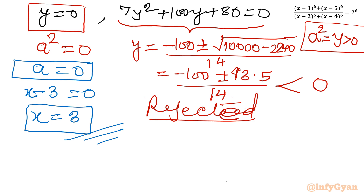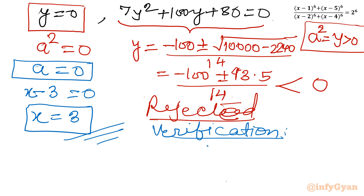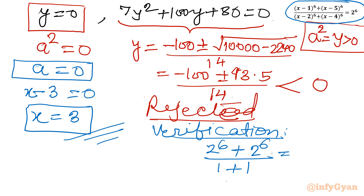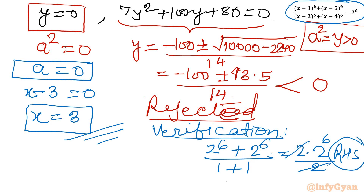Let's verify quickly. Substituting x = 3: LHS = (3-1)^6 + (3-5)^6 over (3-2)^6 + (3-4)^6 = 2^6 + 2^6 over 1 + 1 = 2·2^6 / 2 = 2^6. This equals the RHS, so LHS equals RHS. The solution is verified.